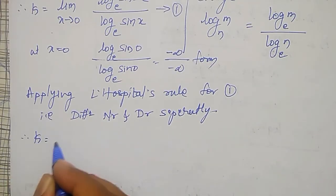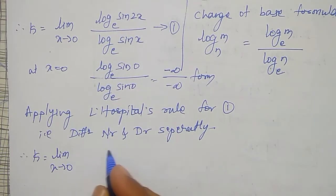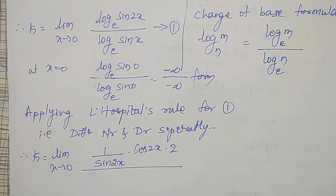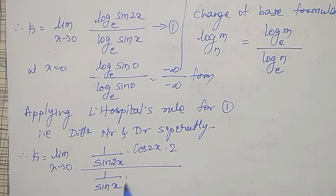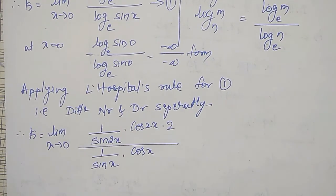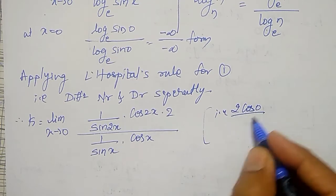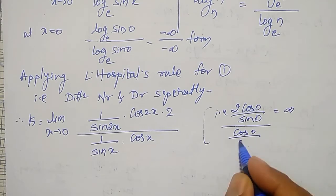Therefore, k is equal to limit as x tends to 0. Differentiation of the numerator — log of sin 2x becomes 1 divided by sin 2x, times cos 2x times 2 — all divided by the differentiation of the denominator, which is 1 divided by sin x times cos x. Now if you substitute x equal to 0, this is again infinity by infinity: 2 times cos 0 divided by sin 0 is infinity, and cos 0 divided by sin 0 is also infinity.